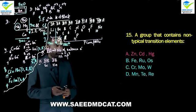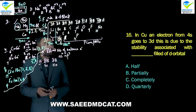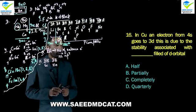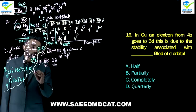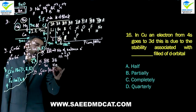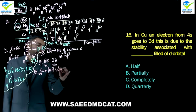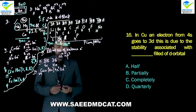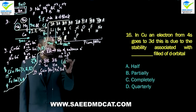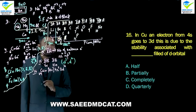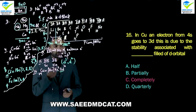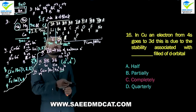Question 16: In copper, an electron from 4s goes to 3d. This is due to stability associated with which type of filled d orbital? Copper (atomic number 29) has configuration [Ar] 4s1 3d10 instead of the expected 4s2 3d9. One electron is promoted to 3d to make it completely filled. Remember that d5 and d10 configurations are extra stable. In copper's case, d10 (completely filled d orbital) provides the extra stability. Charlie option: completely filled d orbital.